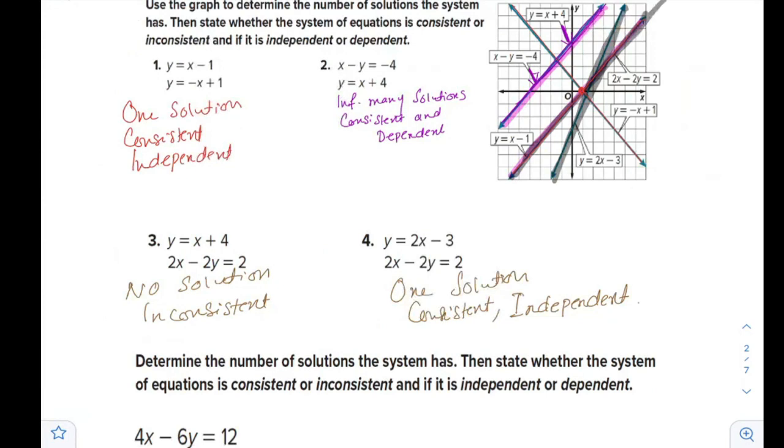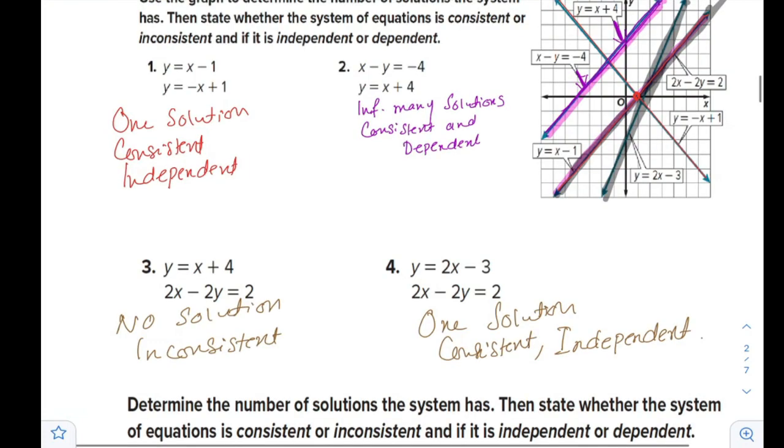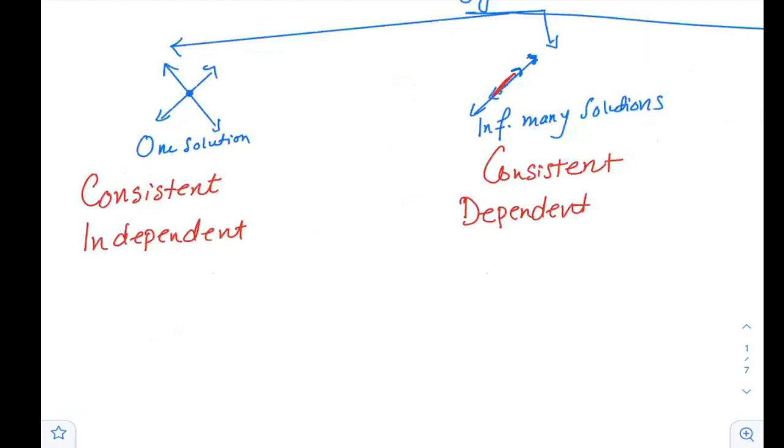Now let's go to the next step, which we can determine the number of solutions and classify them without seeing the graphs. How can we do that? Actually, we will use the slope. If the lines are intersecting, if the slope of the first line is not equal to the slope of the second line, irrespective of B, the y-intercept, then they should have one solution.